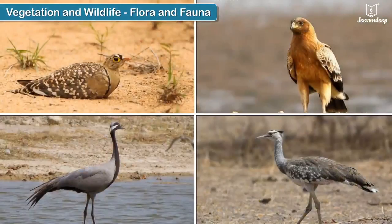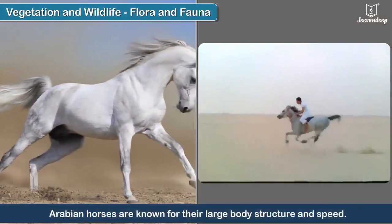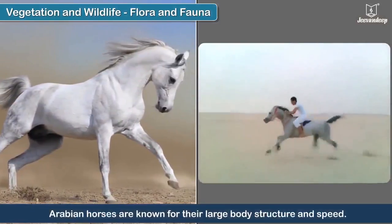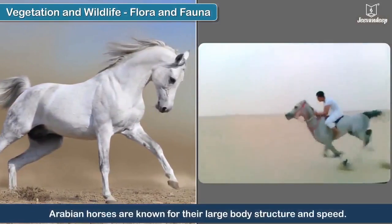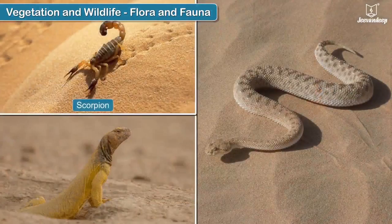Birds like grouse, hawks, cranes and sandgrouse are found here. Arabian horses are known for their large body structure and speed. Scorpions and some reptiles like lizards and sand vipers are found here.